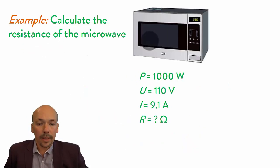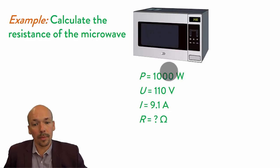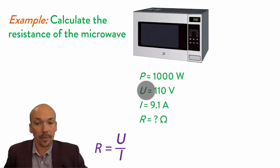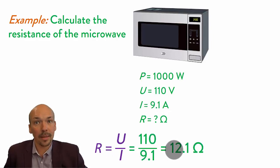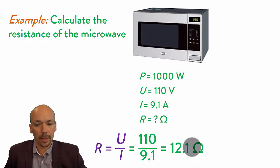Now if we look at this microwave, we can calculate its resistance. Using the equation R = U / I, we have the voltage and the electrical current. We put it in: 110 divided by 9.1, and we know that the resistance is 12.1 ohm. Don't forget to include the unit — you always have to answer with units.